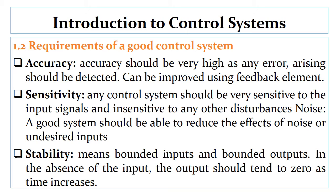Requirement number two is sensitivity. Sensitivity is a measure of the dependence of a system's characteristics on those of a particular element. Any system should be very sensitive to the input signals and insensitive to other disturbances such as noise. Therefore, a good system should be able to reduce the effects of noise and other undesired inputs.